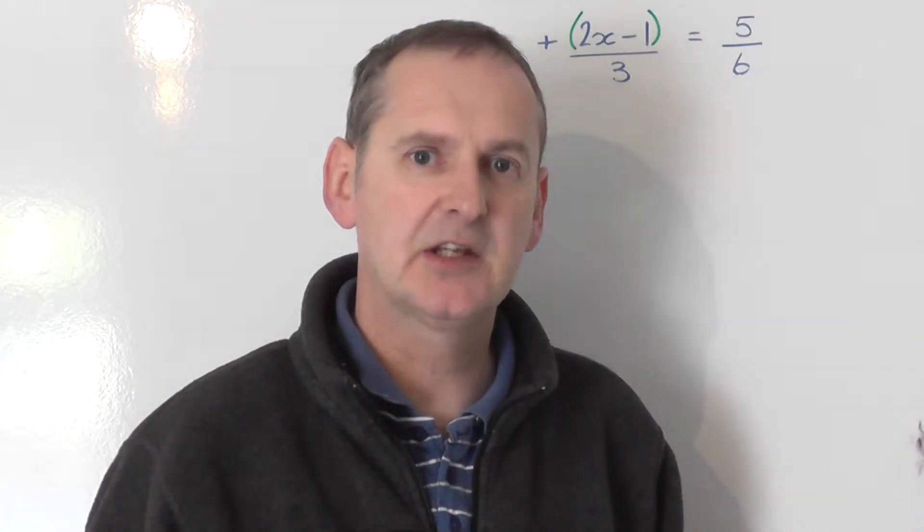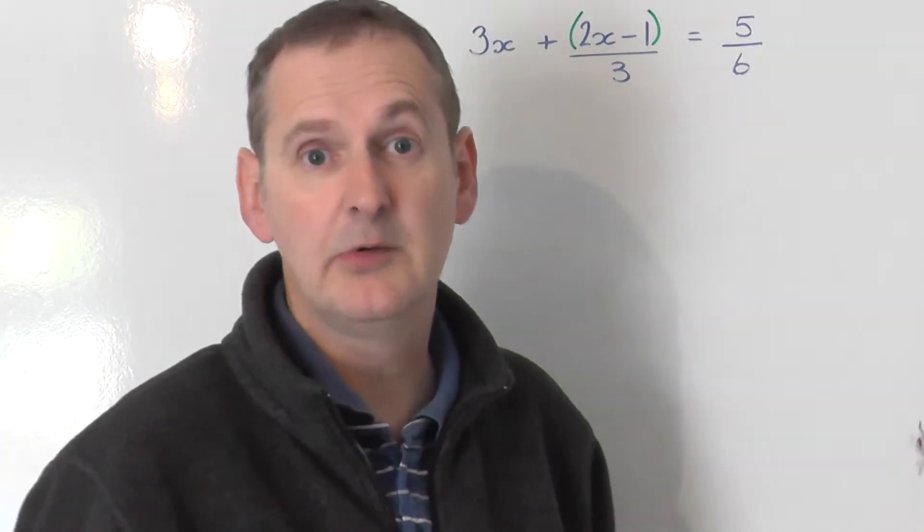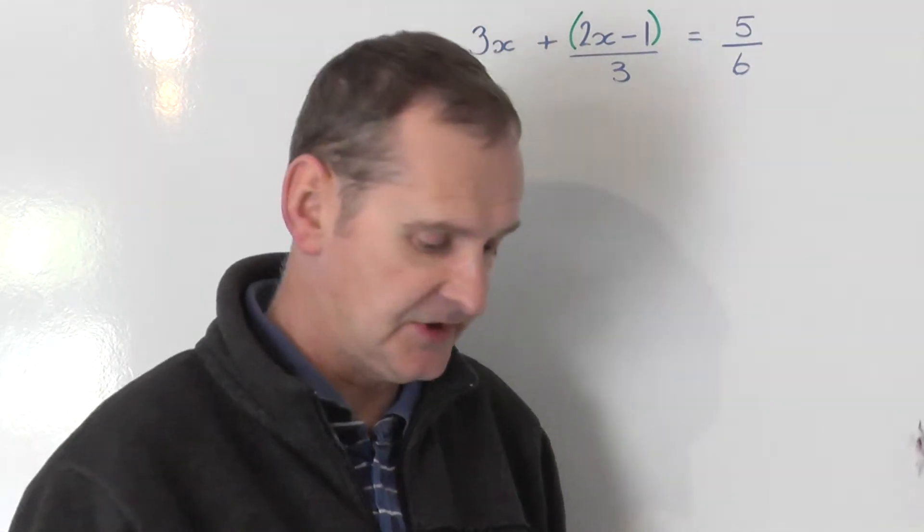The LCM of 3 and 6 is 6. 6 is the smallest number that 3 and 6 will go into. 3 goes into it twice, 6 goes into it once. So we'll use 6 as the LCM.